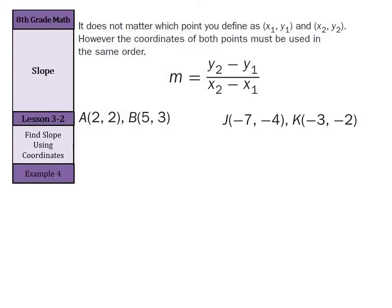So we're given A being 2, 2 and B being 5, 3. What I always do, whether I'm in the 8th grade, in high school, college, or even teaching, what I always do on slope problems is I assign one of my ordered pairs as x1, y1, and the other ordered pair as x2, y2.